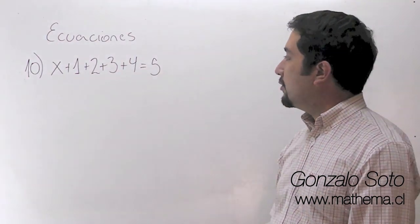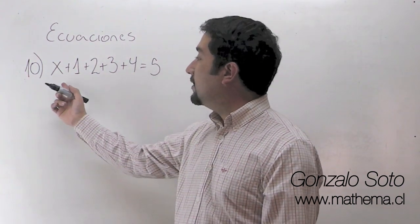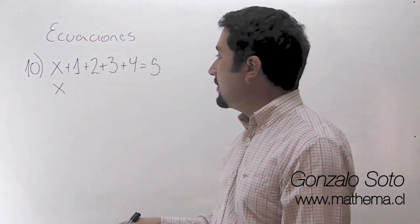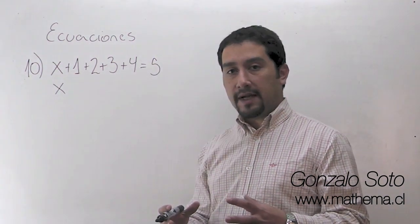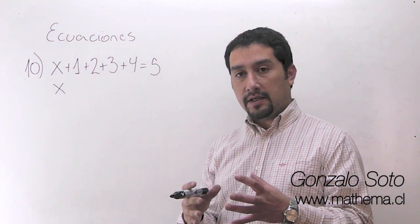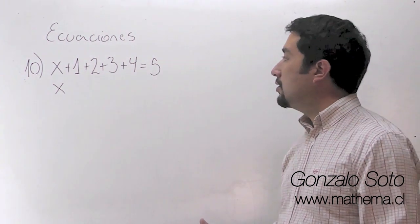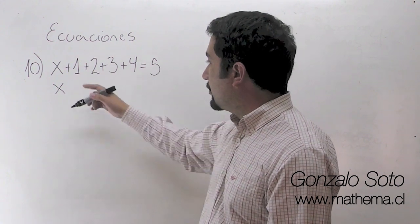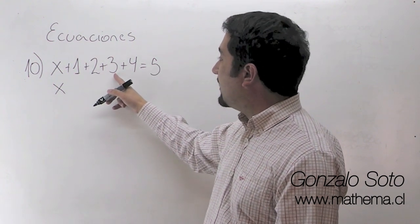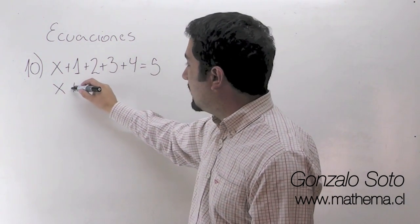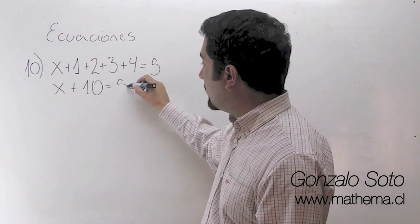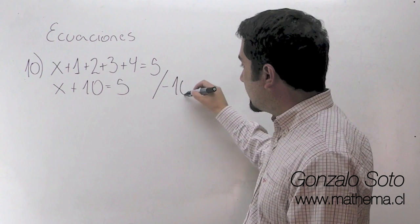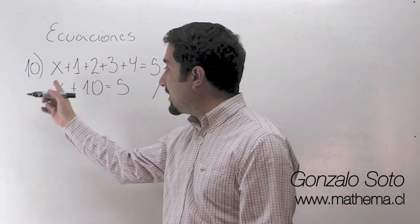En el ejercicio 10 tenemos la suma de 1 más 2 más 3 más 4 y lo estamos sumando a x, y esto es igual a 5. Recuerden que siempre lo que uno está buscando en las ecuaciones es dejar a la incógnita aislada a un lado para poder encontrar el valor de ella. Entonces lo que vamos a hacer es sumar estos 4 números: 1 más 2 son 3, 3 más 3 es 6 y 6 más 4 es 10. X más 10 es igual a 5. Para dejar la x solita vamos a restar 10 a cada lado.